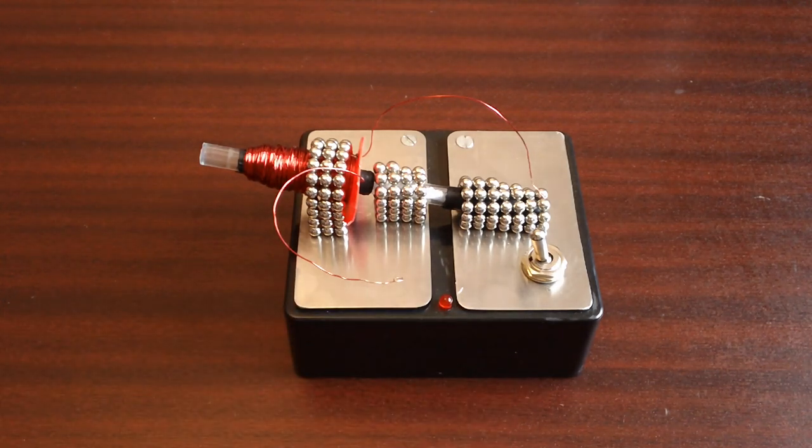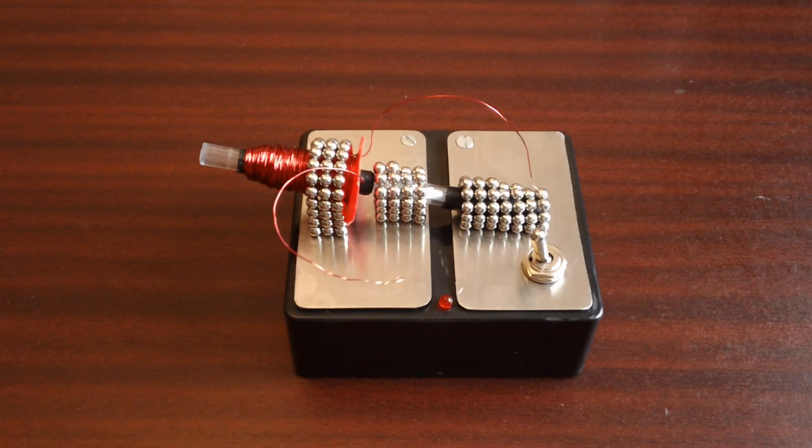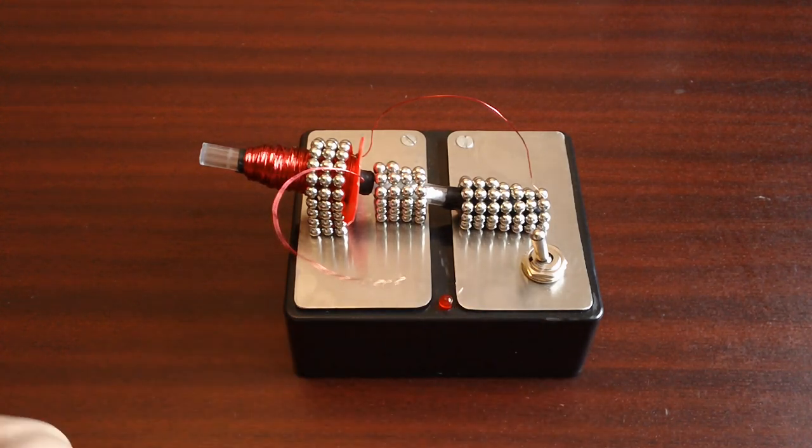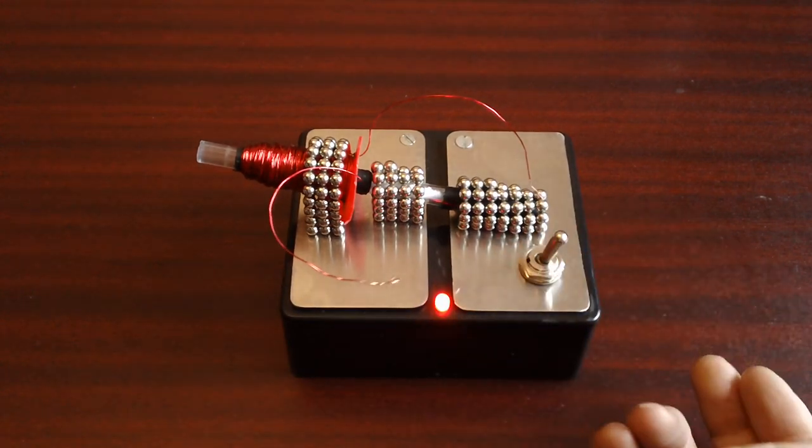On top of here are two electrified plates. This would be the plus and this would be the minus side. Inside are four AA batteries that power these plates, and an LED and a 10 amp switch.